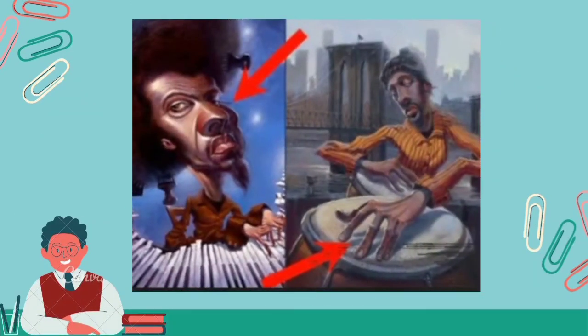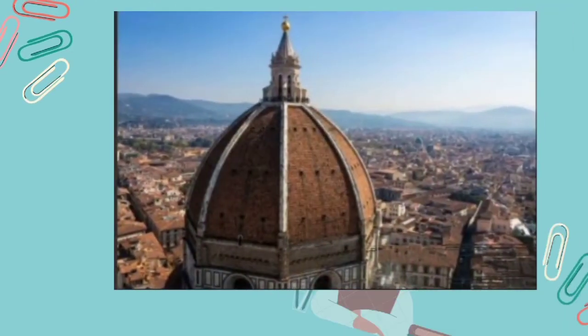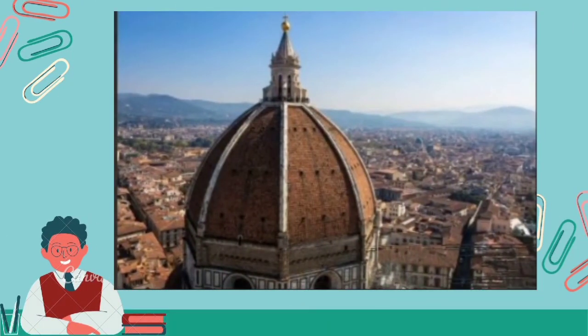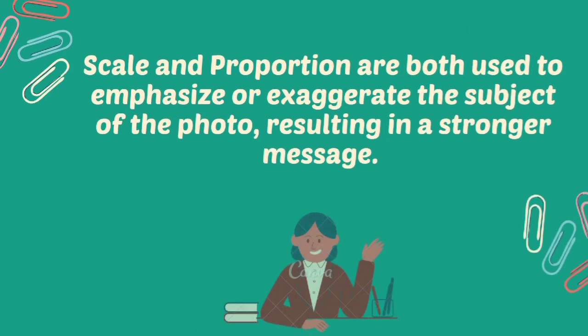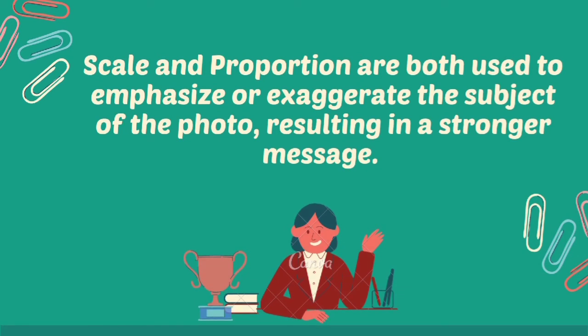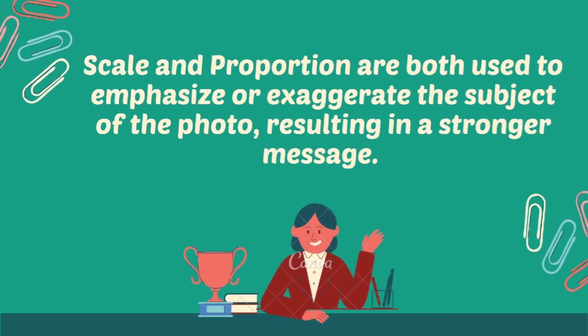Another example emphasizes the man's head and the man's hand. Here the artist uses proportion to exaggerate the size of the main subject. To summarize, scale and proportion are both used to emphasize or exaggerate the subject, resulting in a stronger message.